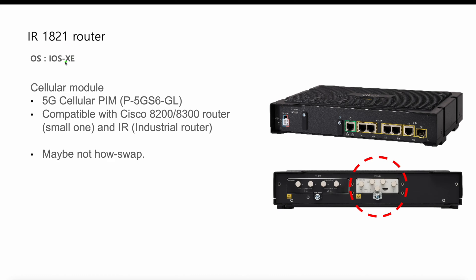The Cisco IR router uses the same IOS XE as the ISR 4400, 4300, and these days the 8283 router. Almost every Catalyst series like 9293, 9456, and the 1900 red series uses the same OS. This is a 5G cellular card — the product ID is P-5G-S6-GL. It may be compatible with recent Cisco routers and other IR routers as well.